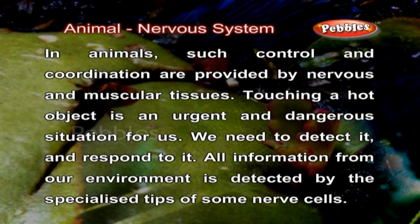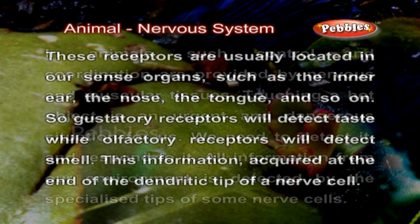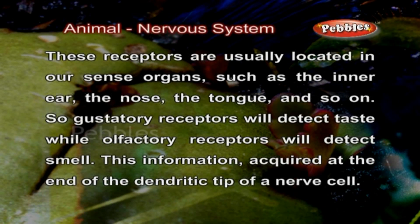In animals, such control and coordination are provided by nervous and muscular tissues. Touching a hot object is an urgent and dangerous situation for us. We need to detect it and respond to it. All information from our environment is detected by the specialized tips of some nerve cells. These receptors are usually located in our sense organs such as the inner ear, the nose, the tongue and so on.